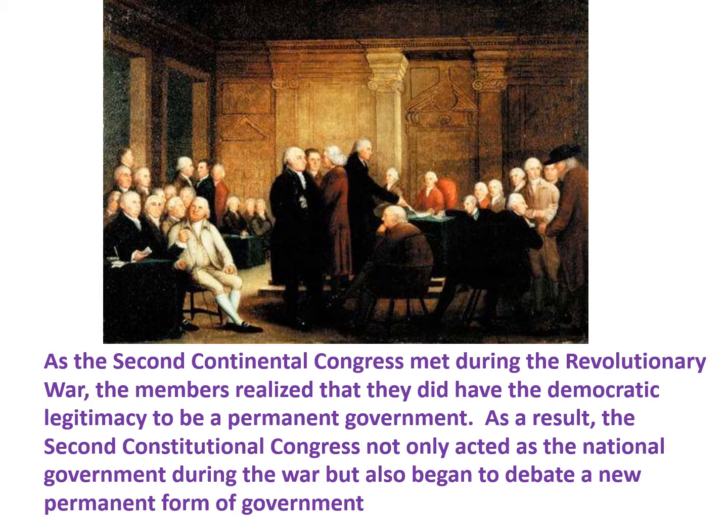As the Second Continental Congress met during the Revolutionary War, the members realized that they didn't have the democratic legitimacy to be a permanent government. As a result, the Second Continental Congress not only acted as the national government during the war, corresponding with the troops and trying to fund it, but it also began to debate a new permanent legitimate form of government for the new nation they anticipated.